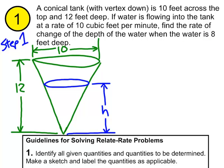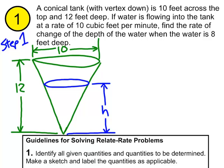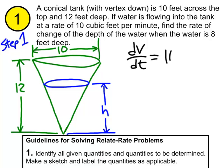At a certain point in time the water is 8 feet deep, and we want to answer the question at that point in time. But ultimately that height is changing at all times. So let's identify all the given quantities and quantities to be determined. Water is flowing into the tank at 10 cubic feet per minute — that is a rate. It's saying the rate of change of volume, dV/dt, is 10 feet cubed per minute.